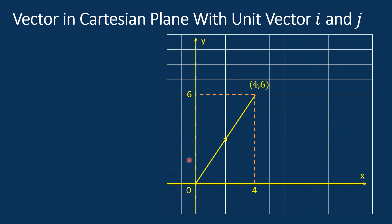Therefore, the vector v can be written as v = 4i + 6j, where i and j represent unit vectors along the x-axis and y-axis respectively. This can also be written in column vector form as (4, 6). This is how we represent a vector in a Cartesian plane.